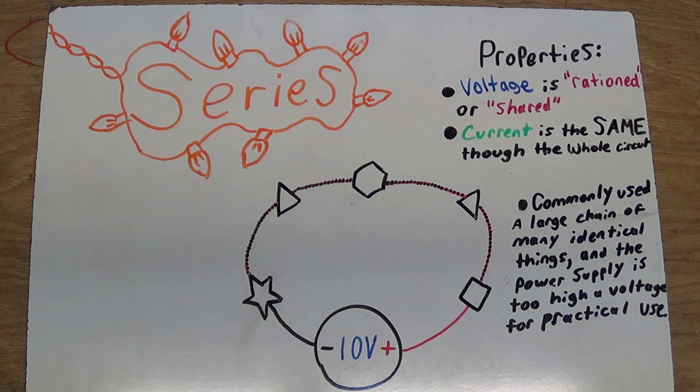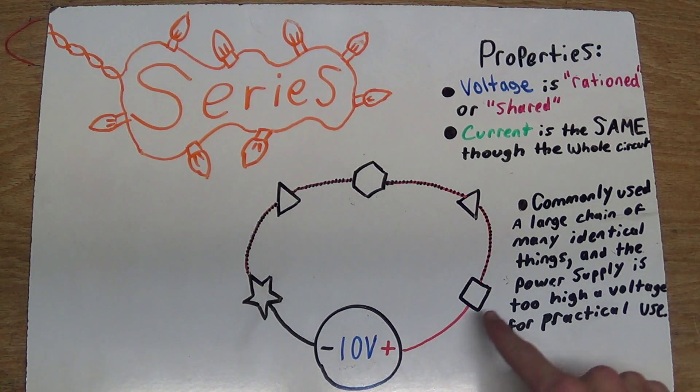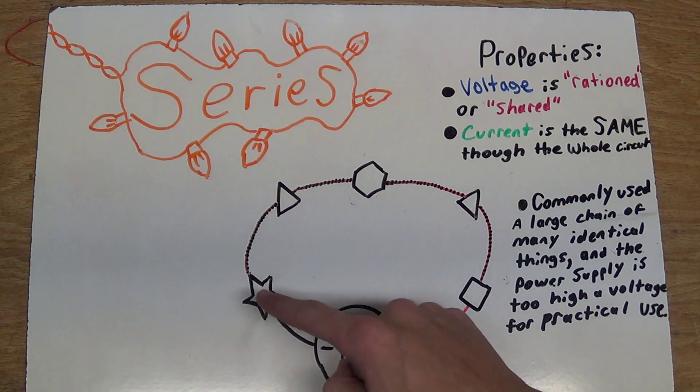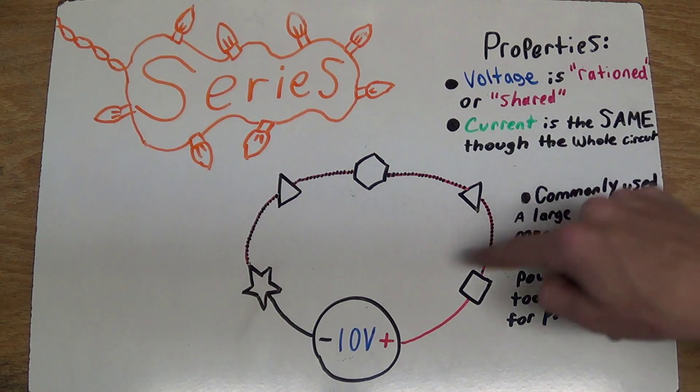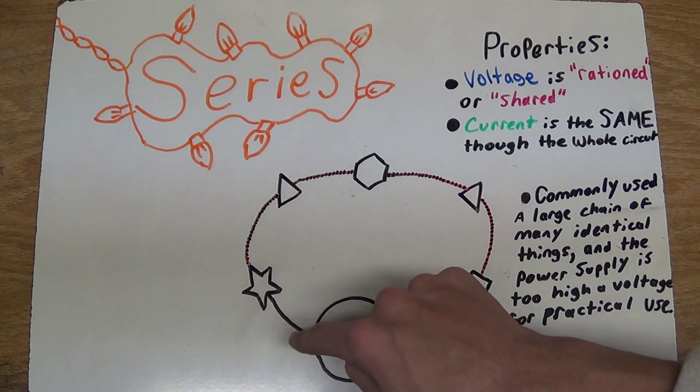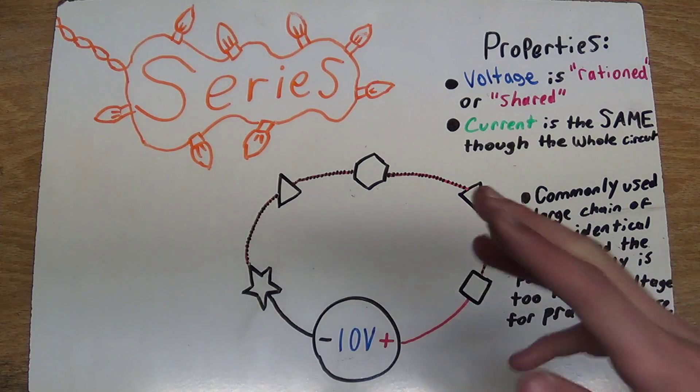Alright, now let's cover series circuits. You can see a series circuit is called a series, because all of the parts are in a series. Now these types of circuits have some pretty interesting properties, in that the voltage is divided amongst all of these parts, and the current through all of those parts is the same.